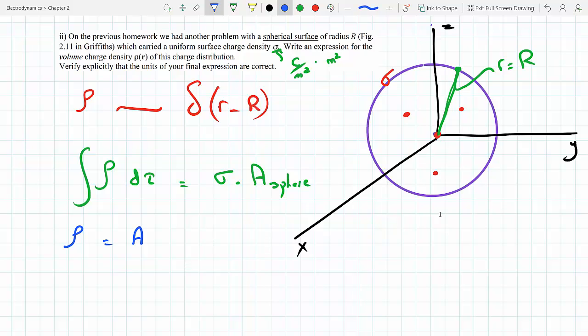I'm going to call that K. So this is going to be K delta R minus R.